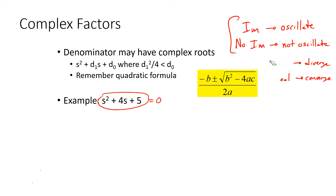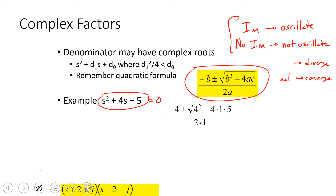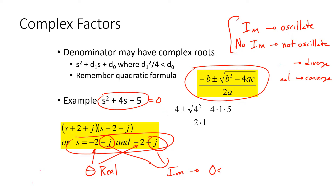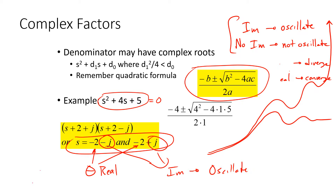Using the quadratic formula, we compute the roots and get s = -2 - j and s = -2 + j. We have negative real parts, so it's going to converge. We also have imaginary parts, so it is going to oscillate. That means it might oscillate but then finally converge to a value.